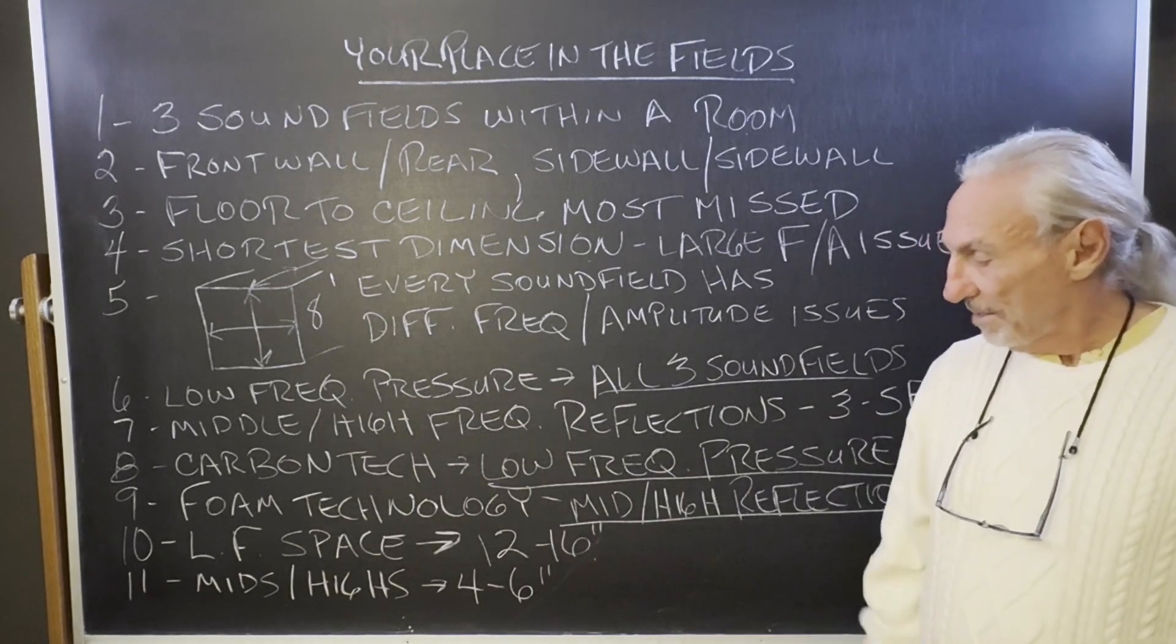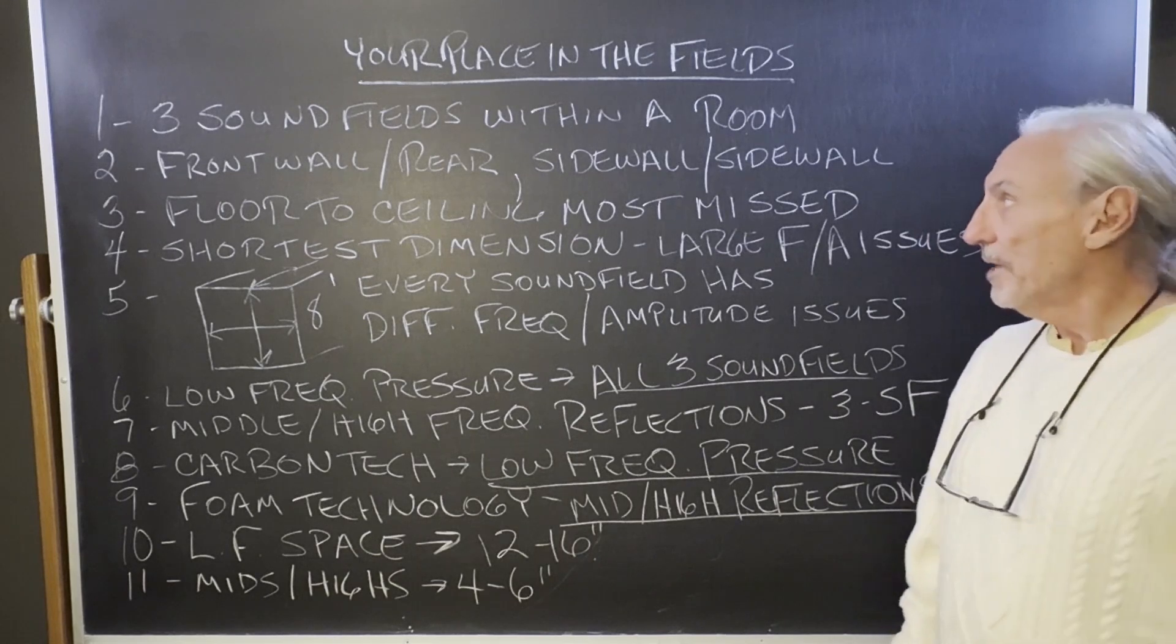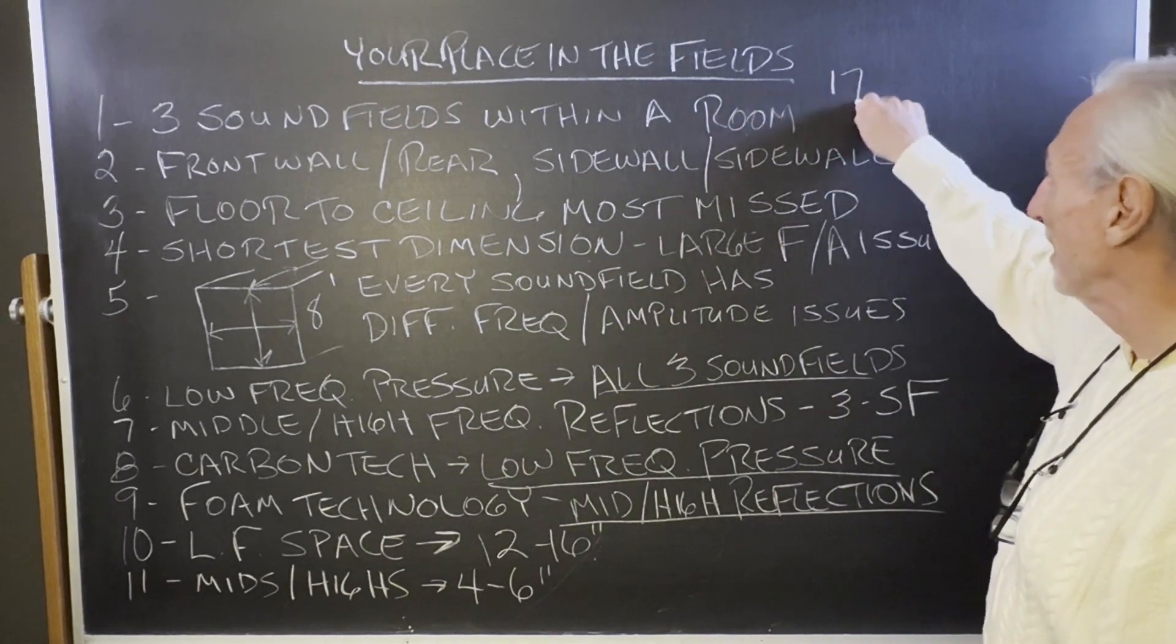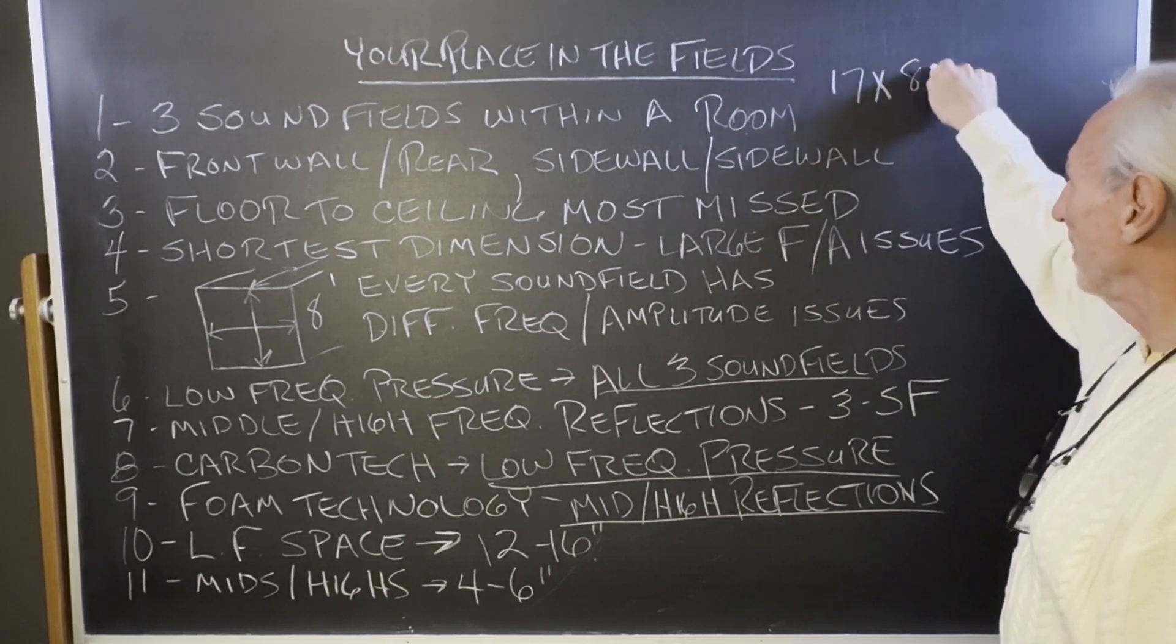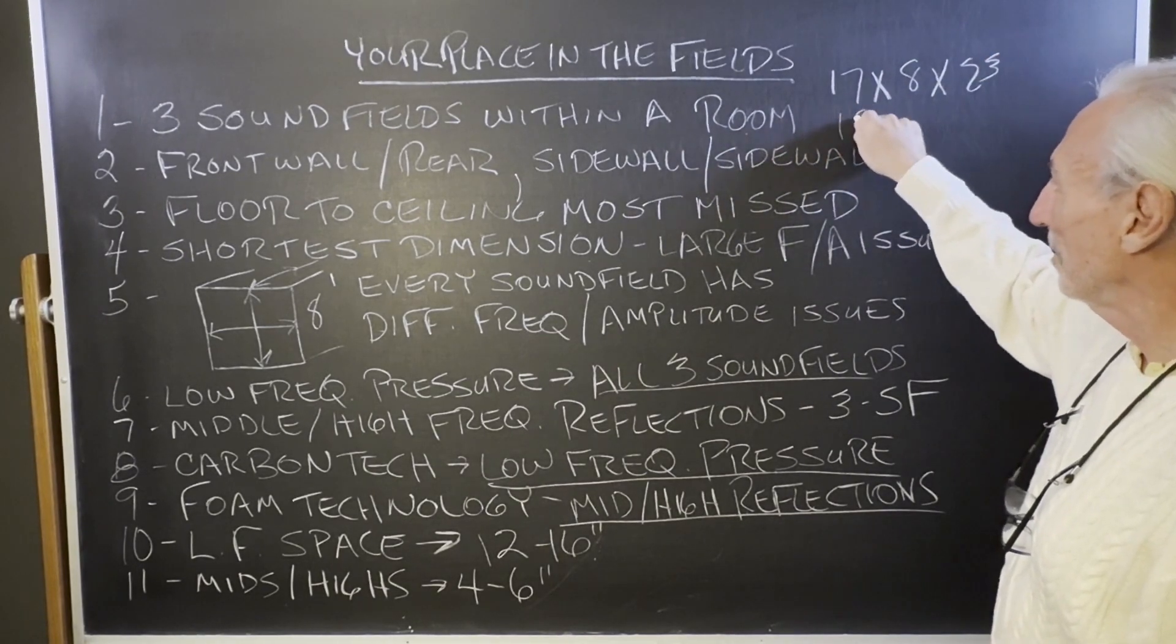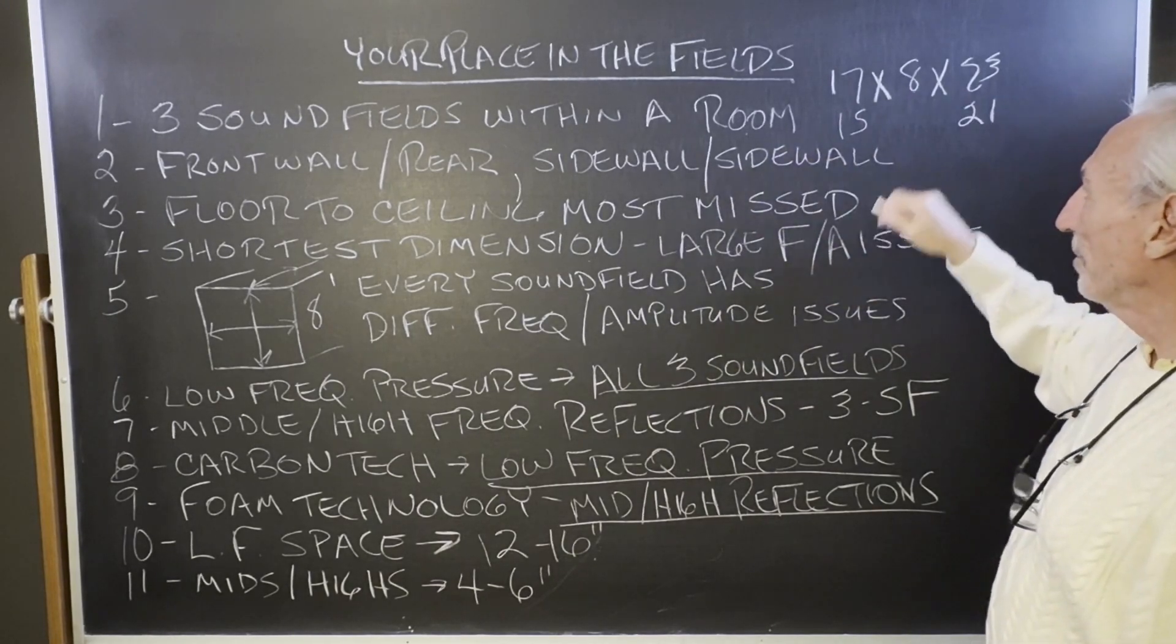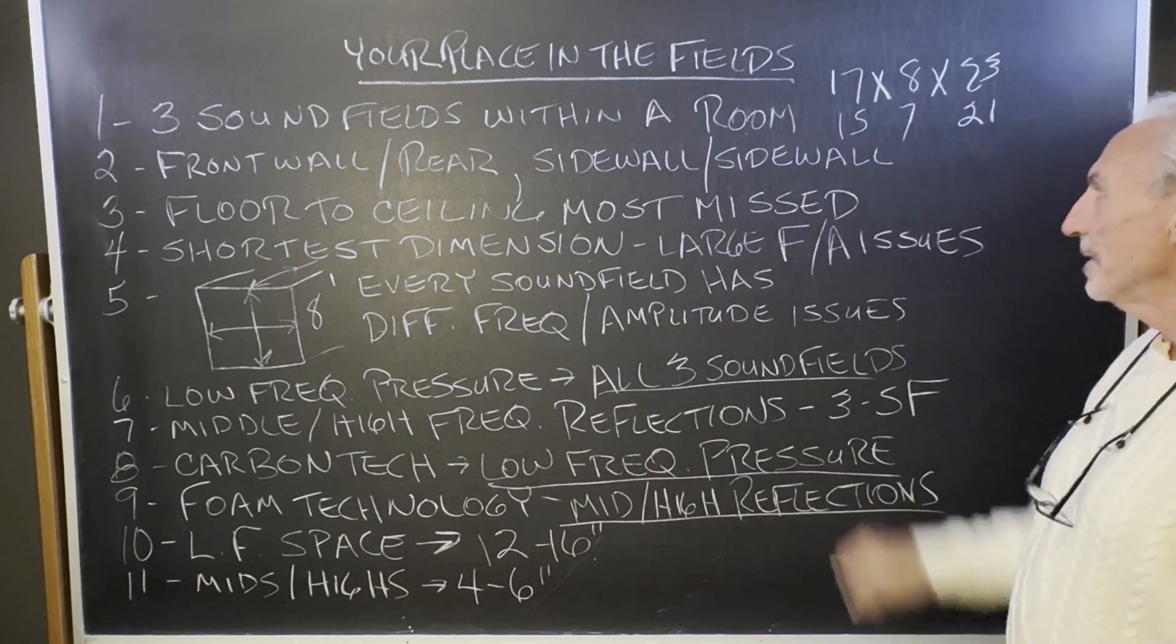You can see you're going to be giving up a lot of space in your room. If you have a room that's 17 by 8 by 23, when you treat the low frequencies, you're going to be down to 15, down to 21. For the height, if you treat the low frequencies, you could be down to 7.